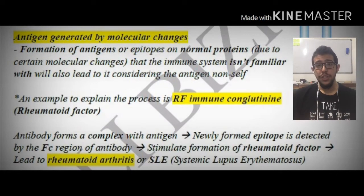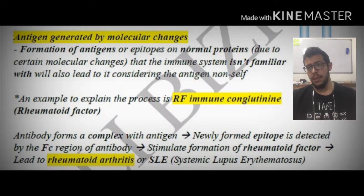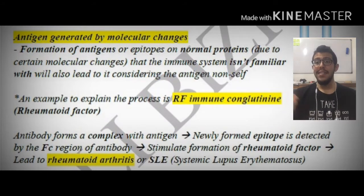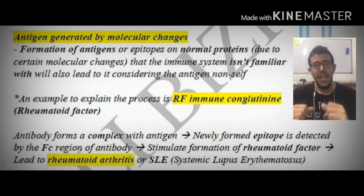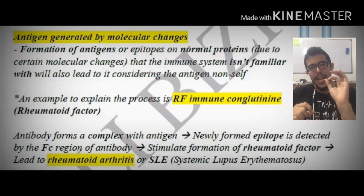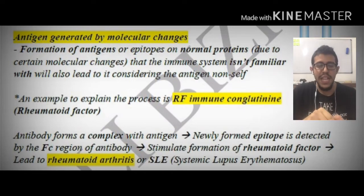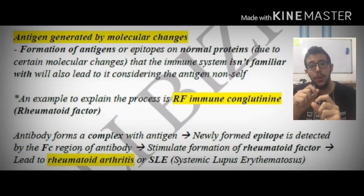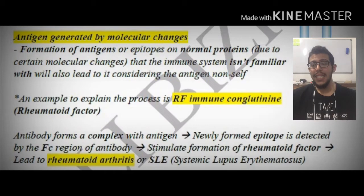Now, antigens generated by molecular changes. First, let's understand the formation of antigens or epitopes on normal proteins due to certain molecular changes that the immune system isn't familiar with. We've got some changes in the amino acid sequence of these antigens. The antibodies are going to be focusing on and detecting certain epitopes, which are very small regions within the antigens, and these amino acids making up these epitopes might be slightly altered, possibly leading the immune system to consider the antigen as non-self.